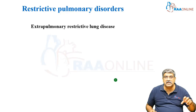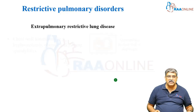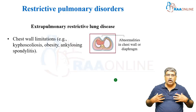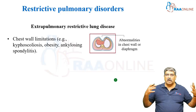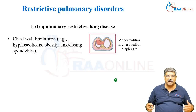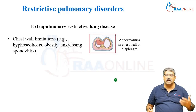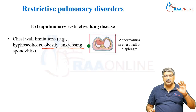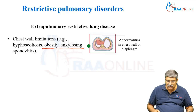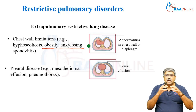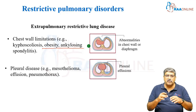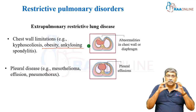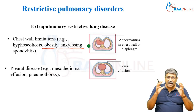Coming to extra-pulmonary lung disease, it might be due to chest wall limitation where the lung cannot expand, as happens in kyphoscoliosis, obesity, or ankylosing spondylitis. Or you may have pleural disease — mesothelioma, pleural effusion, or pneumothorax.